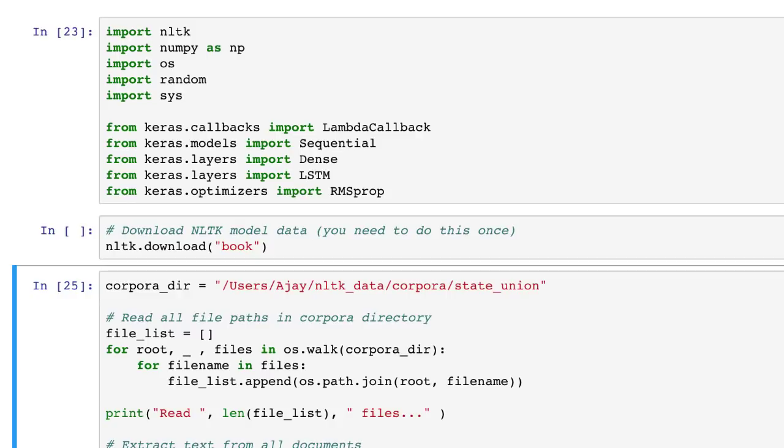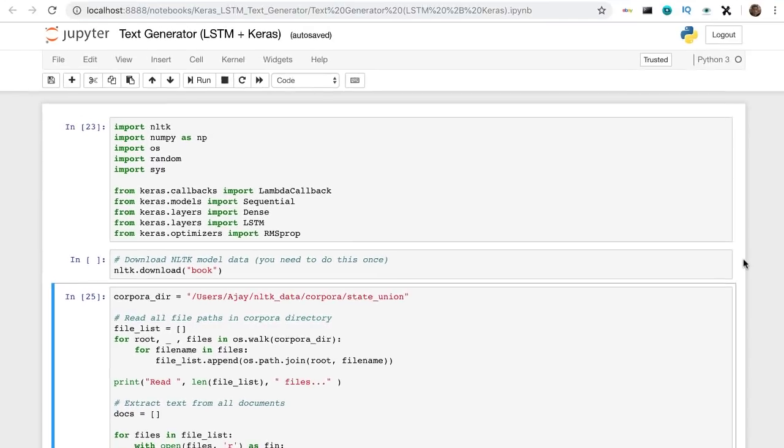Model is used to construct our RNN. Layers is used to add LSTM and normal components to our network. Optimizers allow us to define the optimizer for training.